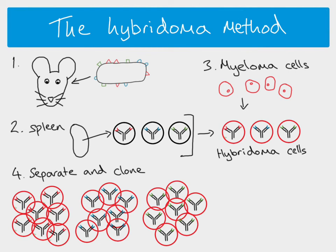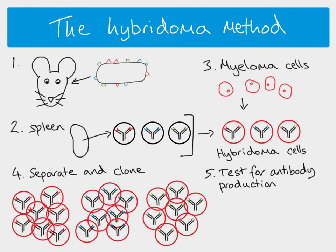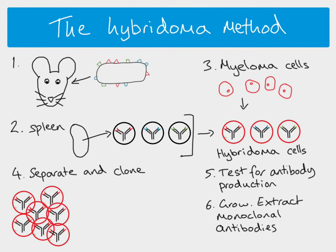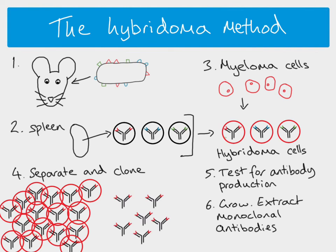Once we've got our separate groups of cells we can test them for antibody production. We introduce the antigen that we're interested in into each group and see which of them respond to that antigen — that will be the antibody we want. We can then identify which cells are producing the antibody we want, get rid of the other cells, and continue to grow this cell line. As they grow they produce the monoclonal antibodies — all identical, all from this one original clone — and we extract them.